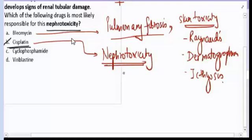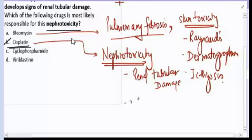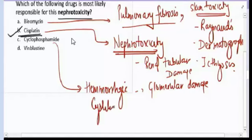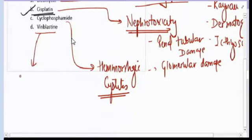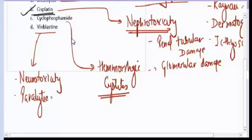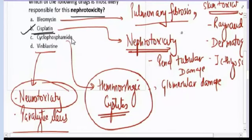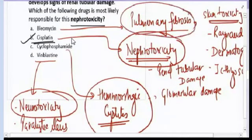The characteristic toxicity of cisplatin is nephrotoxicity — it may cause renal tubular damage and glomerular damage. Cyclophosphamide classically causes hemorrhagic cystitis, mainly affecting the bladder. Vinblastine is highly neurotoxic and also causes paralytic ileus. So cisplatin affects kidney, cyclophosphamide affects bladder, and bleomycin affects lungs. The answer for question fourteen is cisplatin.